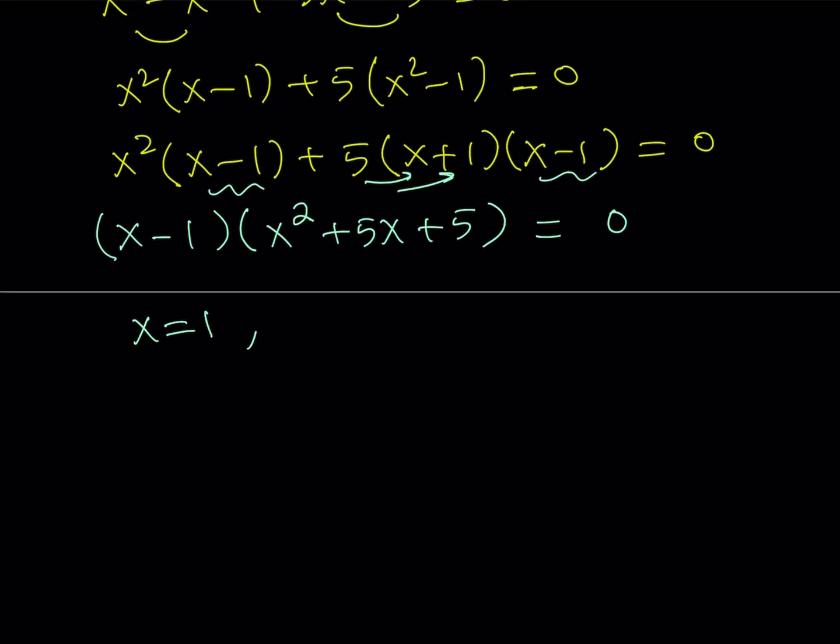So if you solve that quadratic by using the formula, because it doesn't look factorable, x is going to be negative b plus minus the square root of b squared minus 4ac. A is 1, so 4 times 5 is going to be 20, divided by 2a. And from here, x value is going to be given as negative 5 plus minus the square root of 5 divided by 2.